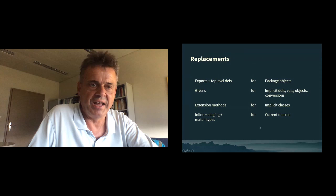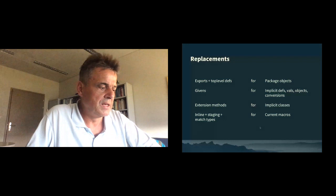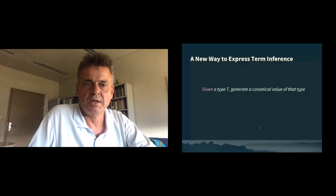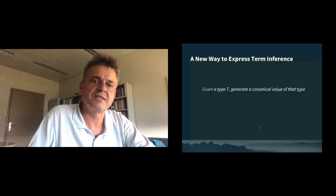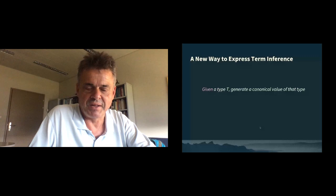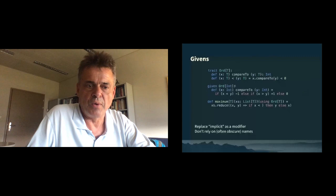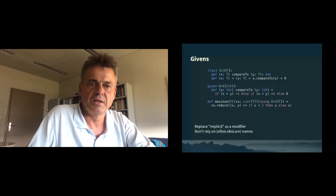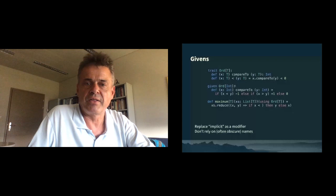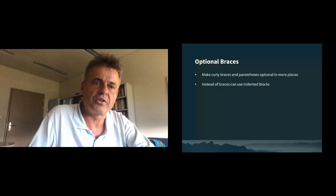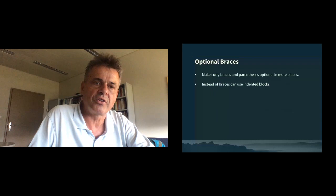The new foundations of metaprogramming are inlines, quotes, and splices — a new way to express term inference. The new motto is: given a type, generate a canonical value for that type, and that replaces `implicit`. You have optional braces: curly braces and parentheses will be optional in a lot more places. Instead of braces you can use indented blocks, and you have a nicer control syntax that doesn't rely on a lot of parentheses and braces.